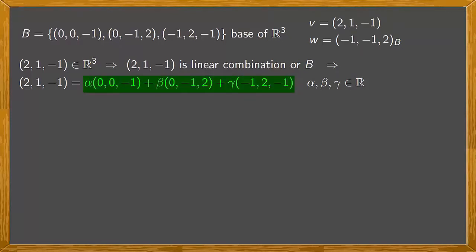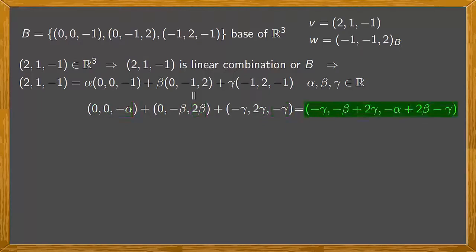Now, if we calculate this expression, we have α times (0,0,-1), which is (0,0,-α), plus β times (0,-1,2), which is (0,-β,2β), plus γ times (-1,2,-1), which is (-γ,2γ,-γ). So for the sum, if we add component by component, we get this result.